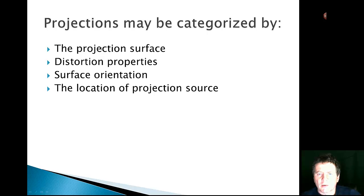So we can categorize these by the type of surface, by the type of distortion, how much distortion we have, whether it's positive or negative, how the orientation is, and the location of the projection source.